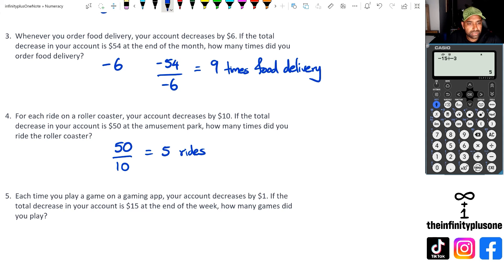And finally, the last question, gaming app account decreases by $1. The total decrease is $15. So we're going to go minus 15 divided by minus one, which means played 15 games. Tried looking online for a different type of division integer questions and I really struggled.